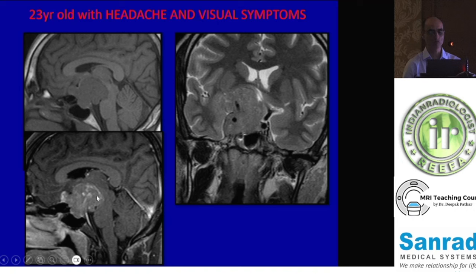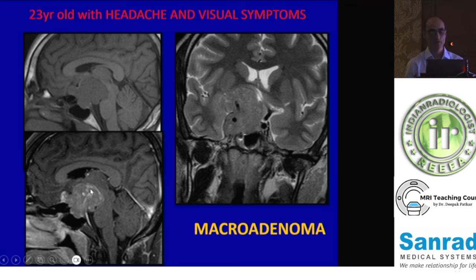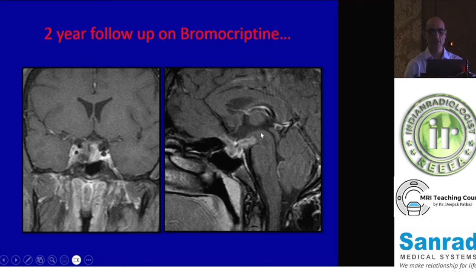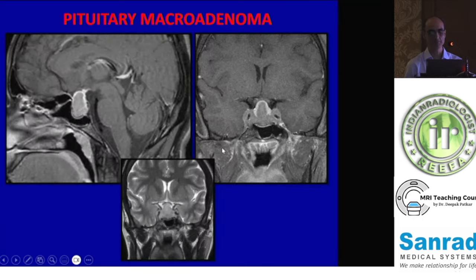The tumor is extending posteriorly into the interpeduncular cistern and also anteriorly along the planum sphenoidale. The same patient on follow-up two years after giving bromocriptine shows how the tumor has markedly shrunk in response to bromocriptine and is now markedly reduced in bulk.